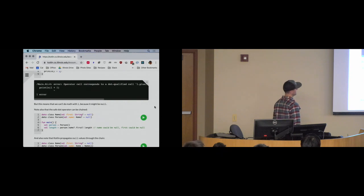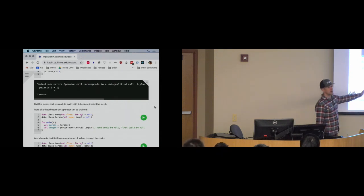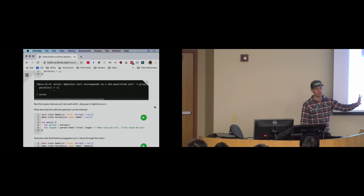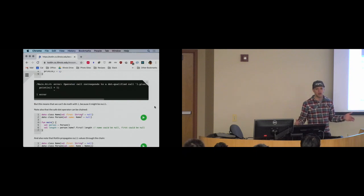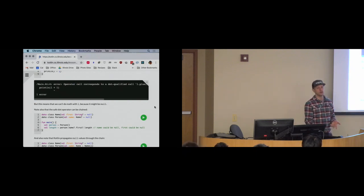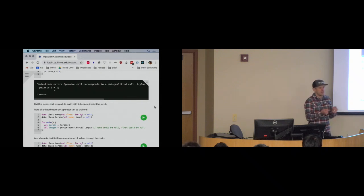You can chain the safe dot operator. When you have an object reference that contains a reference to another object that contains a reference to yet another object, and you want to follow that chain safely, some values might be null. If they are null, you can't keep going — once you get to a null, it's a dead end.